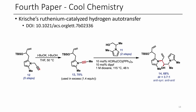In the first key step, they have a propargylic alcohol derivative, and using tert-butoxide and tert-butanol, they go via the allene through deprotonation and protonation of the terminus, giving the allene, and then through subsequent deprotonation and reprotonation they get the internal alkyne species. After this, they do a hydrogen autotransfer reaction to convert this alcohol into a terminal alkene.